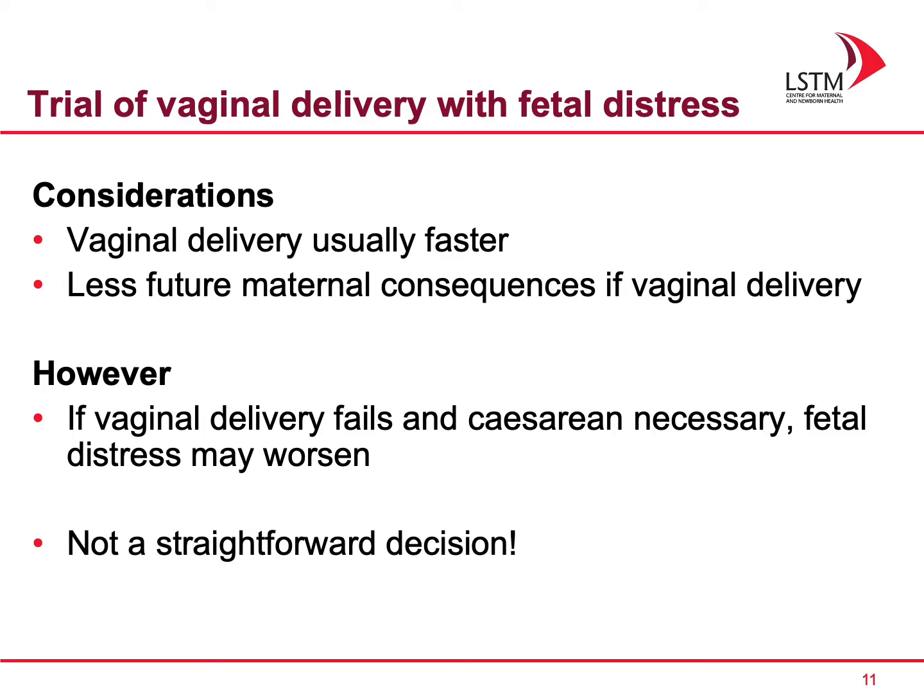Another difficult scenario is a trial of vaginal delivery when there is evidence of fetal distress. The pros are that vaginal delivery is usually faster and there are less future maternal consequences if you are able to perform it. However, if the vaginal delivery fails and caesarean section becomes necessary, the fetal distress may worsen. So it is not a straightforward decision.